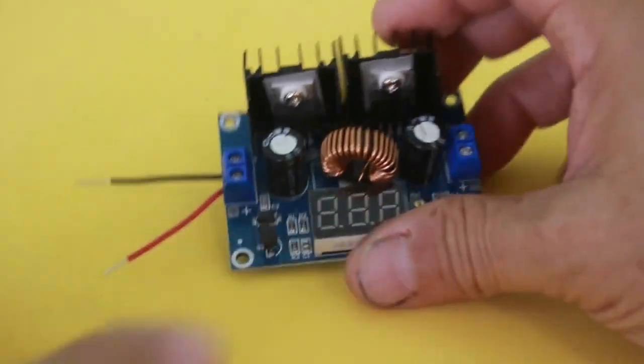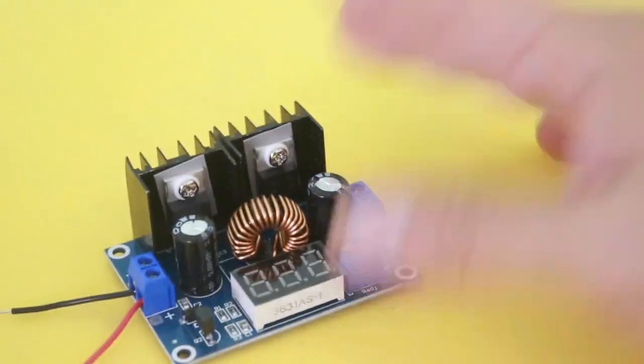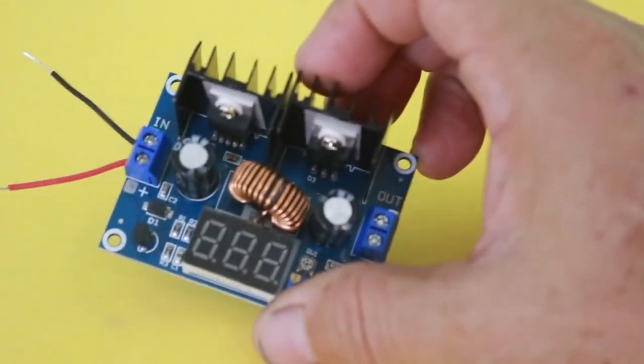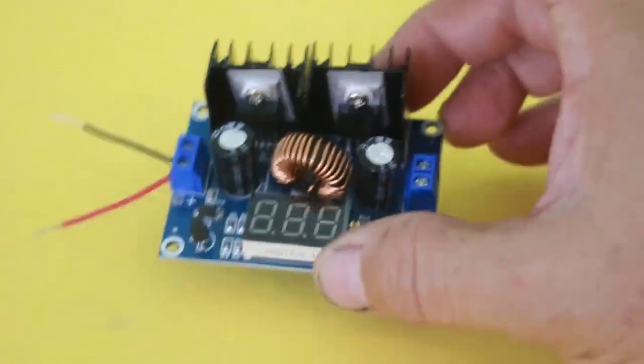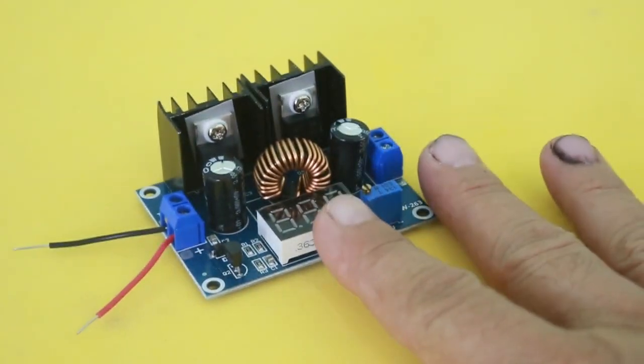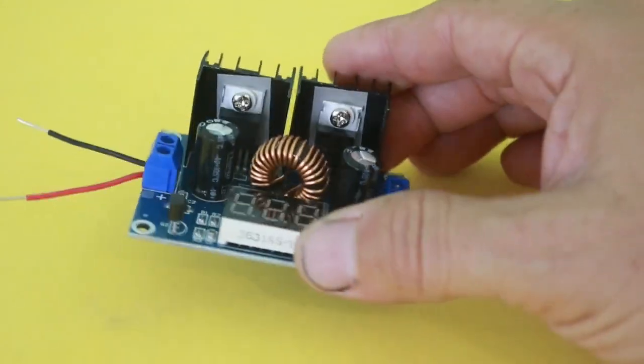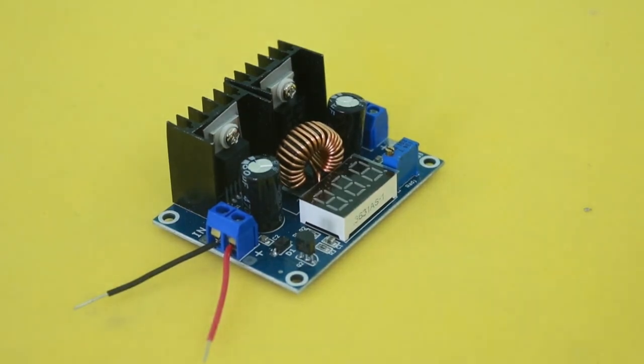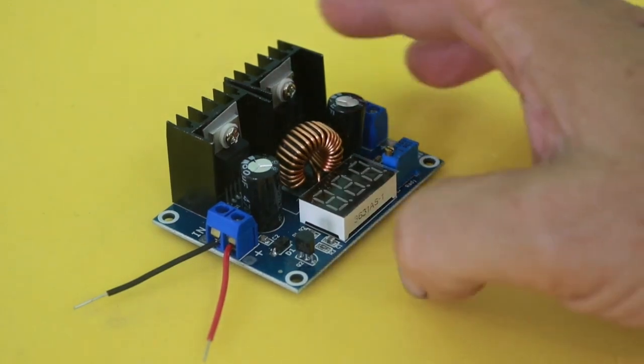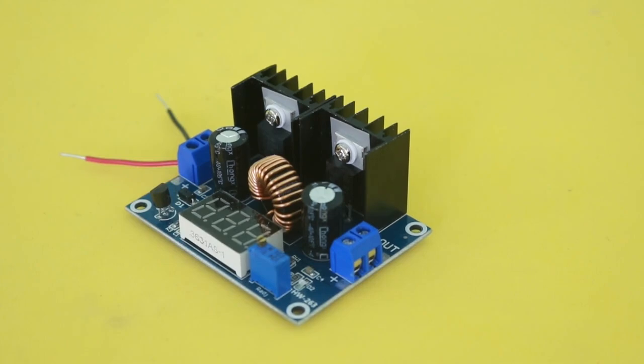So there it is, a dirt cheap voltage converter with not too bad efficiency. You can buy these modules in different values of power, this is 250 watts, 8 amps maximum, but you can get them at values of current of 15, 20 amps also. Thanks for visiting my channel. Hope you liked the video and see you in the next one.